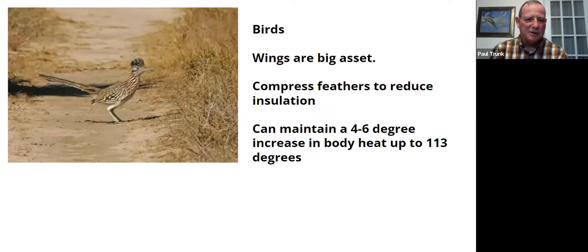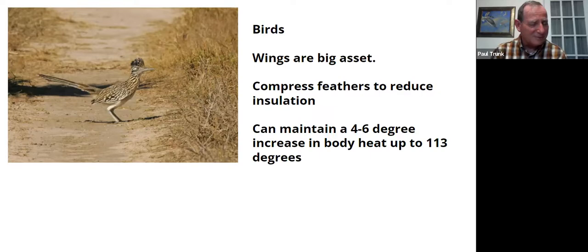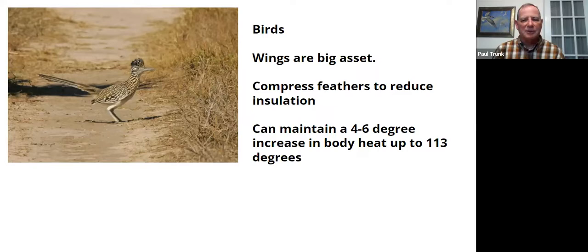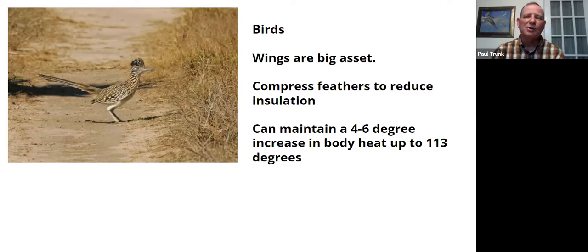Birds are a big part of the desert, especially the Sonoran Desert — we all know the Roadrunner. The way birds survive is they have wings and can fly from areas where it's too hot to areas where it's cooler or in the shade. They compress their feathers in the heat to reduce insulation. Birds are active during the hours of dusk and dawn — you want to get up early in the morning and get out a little later in the evening when it starts to cool down.